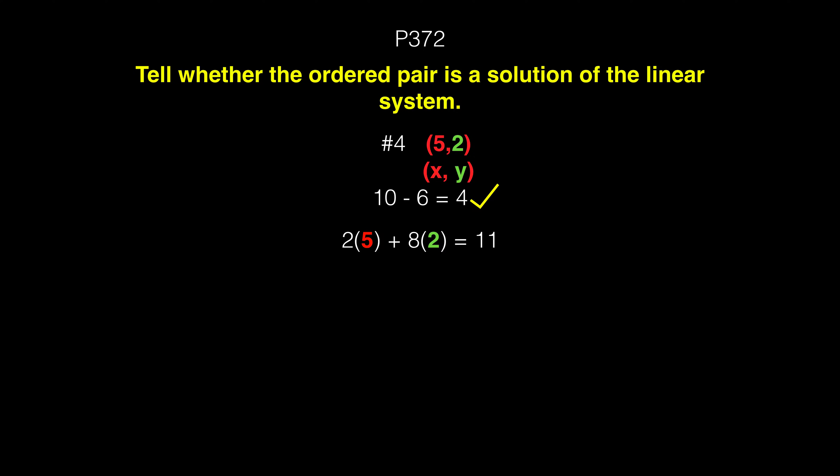Now, does it hold true for the second? If it does, then that means this point is one that both equations have in common. Let's take a look. 2 times 5 plus 8 times 2 is 10 plus 16, and that does not equal 11. So this coordinate point is not on the linear line at the bottom.